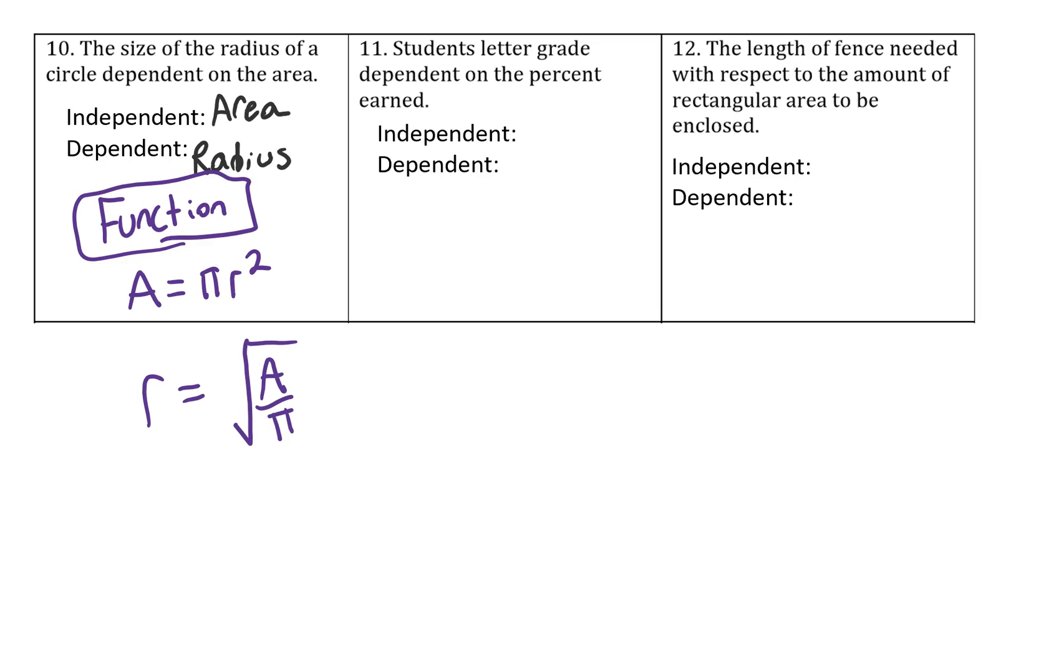Number 11, student's letter grade dependent on the percent earned. So letter grade is dependent, percent earned is independent. So the question is does every percent earned go to one single letter grade? And that is yes. So this is a function because every percent earned goes to one letter grade.